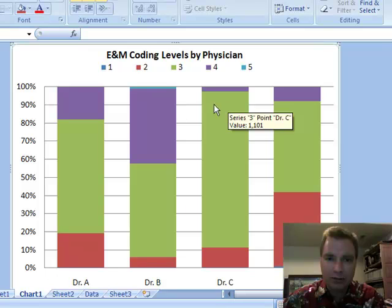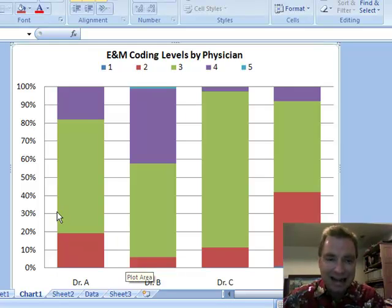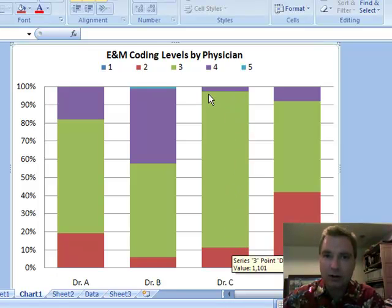I can see hardly anybody's billing level 5 and hardly anybody's billing level 1 in my sample data. And I can see that Dr. C bills the vast majority of her E&M claims with a coding level 3.